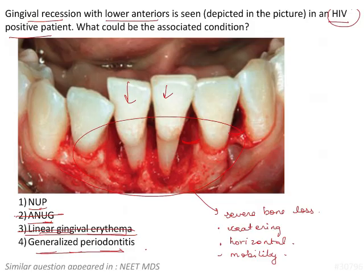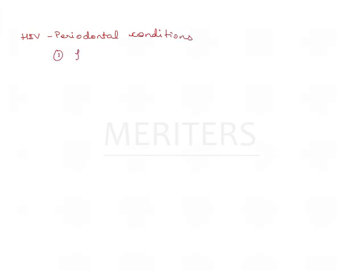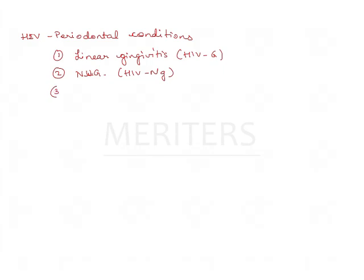The question clearly states the patient is HIV positive. In HIV positive patients, there are 4 clinical periodontal conditions that are relevant. The first is linear gingivitis, which is only limited to the gingiva — earlier known as HIV associated gingivitis. The second is necrotizing ulcerative gingivitis. The third is necrotizing ulcerative periodontitis, which was earlier known as HIV associated periodontitis. The fourth is necrotizing stomatitis.